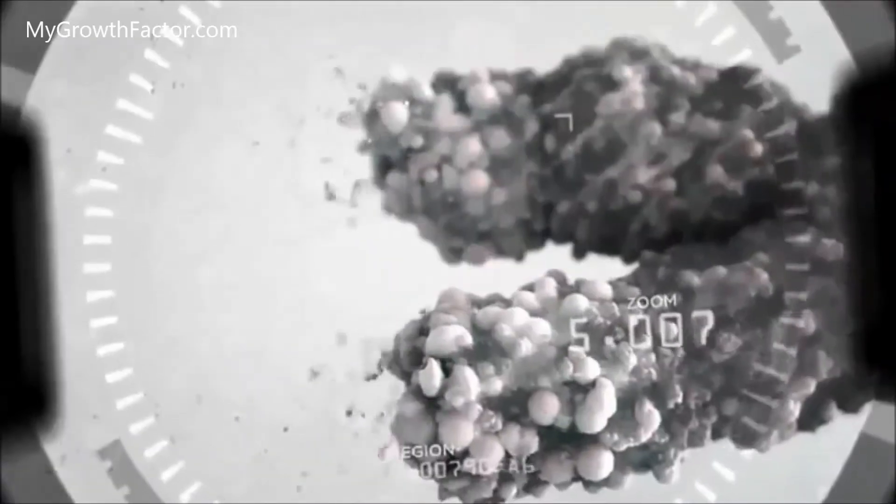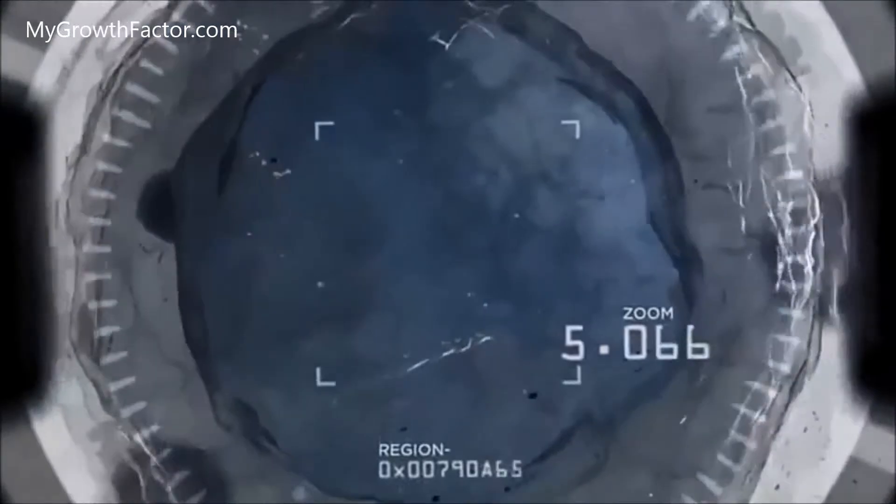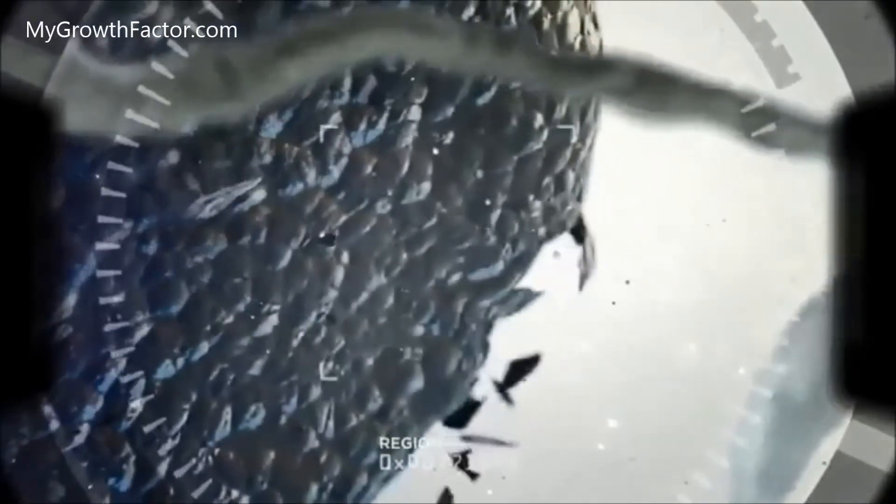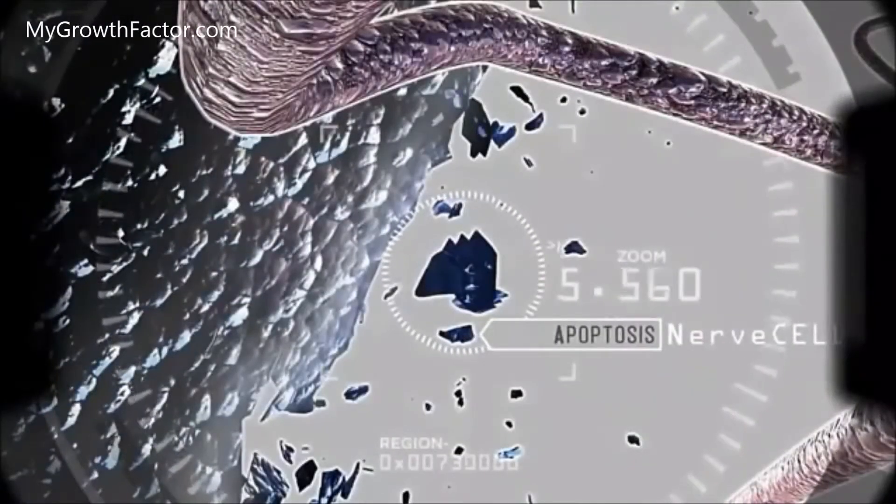When telomeres become too short, our cells can no longer carry out their critical functions. Cells start to self-destruct and eventually die. Scientists call this apoptosis.